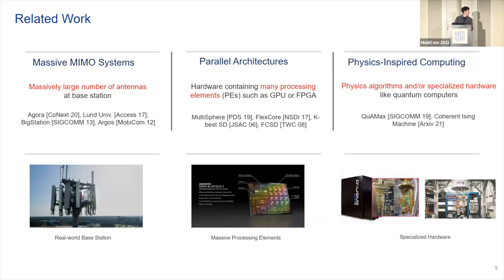There are many related works for each direction. For massive MIMO, we just discussed that. For the middle regime, parallel architecture based detectors are very promising — they make use of hardware containing a massively large number of processing elements to achieve near-ML performance. And lastly, physics-inspired computing is a relatively recent direction. The idea is to use physics-inspired algorithms or specialized hardware to solve the computationally heavy ML detection problem, since they don't suffer from traditional trade-offs that exist in digital methods.